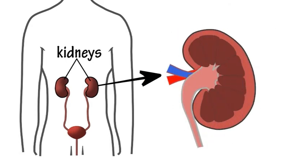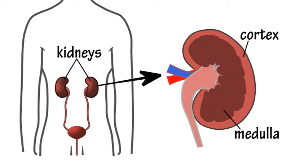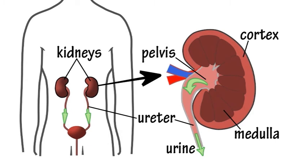If you cut a kidney in half, inside you would see a lightly coloured outer region called the cortex, a dark coloured inner region called the medulla, and a funnel-shaped cavity called the renal pelvis that collects urine. The urine drains into the ureters and is stored in the bladder before being released through the urethra when we urinate.